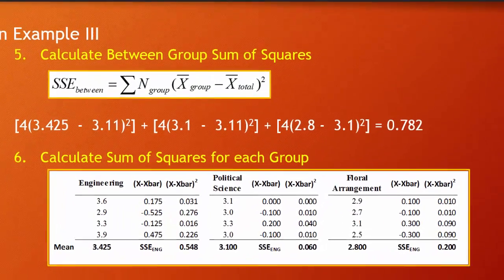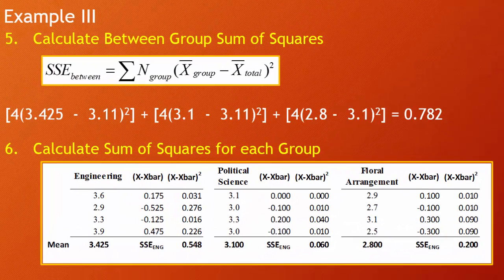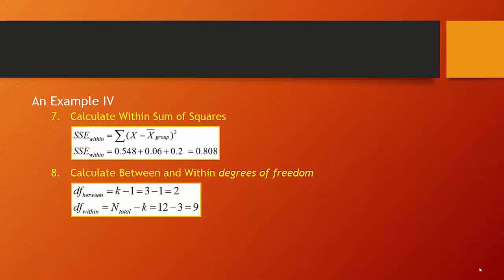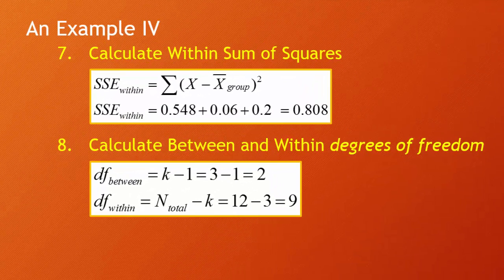Next, we calculate the sum of squares for each group — essentially a variance calculation within each subgroup using PEMDAS: compute (x minus x-bar) and (x minus x-bar)² within each group. How far do engineering students differ from their group mean? How far do political science and floral arranging students differ from theirs? The sum of squares within each group are 0.548, 0.060, and 0.200. Adding them up gives our total within-group sum of squares of 0.808.